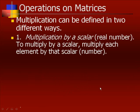Multiplication can be defined in two different ways. One way is multiplication by a scalar, which is just some real number. To multiply by a scalar, you multiply each element by that number.